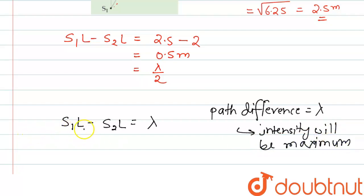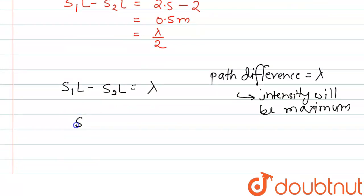So S1L minus S2L equals lambda. We can write S1L equals lambda plus S2L. Lambda is 1 meter, as given in the question, and S2L, which is